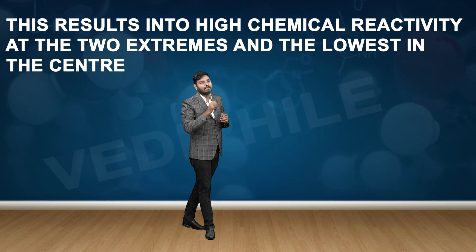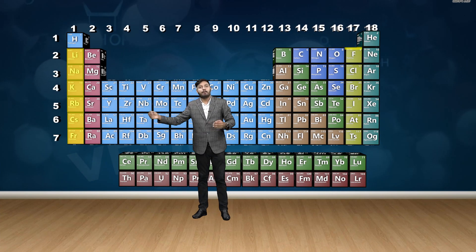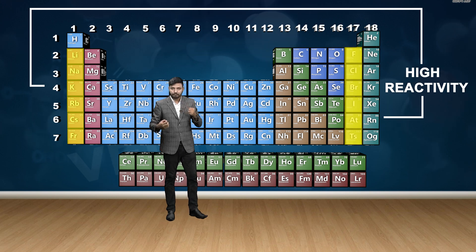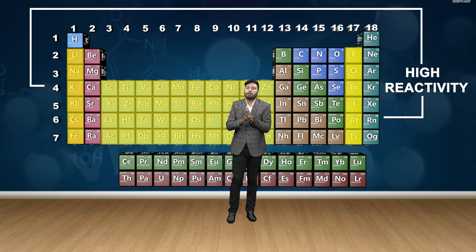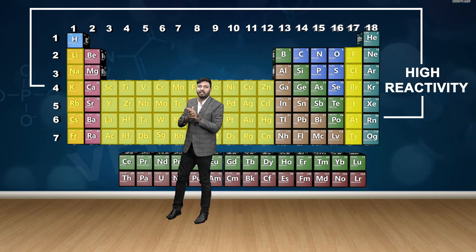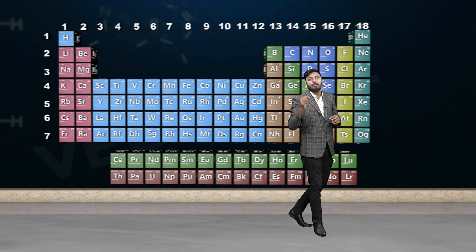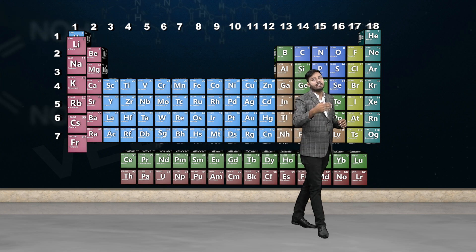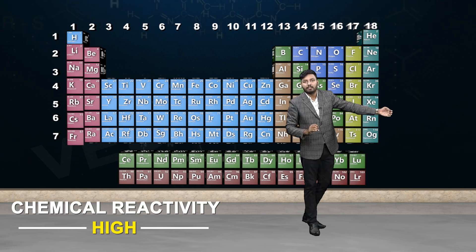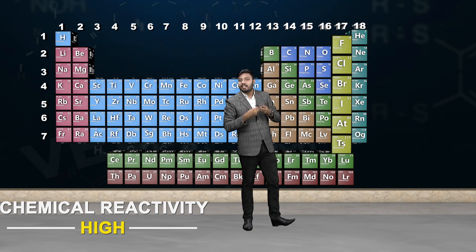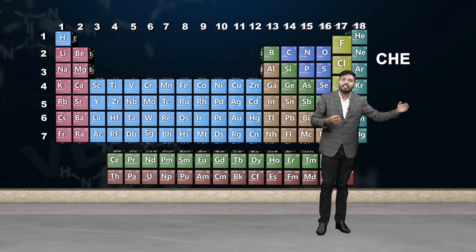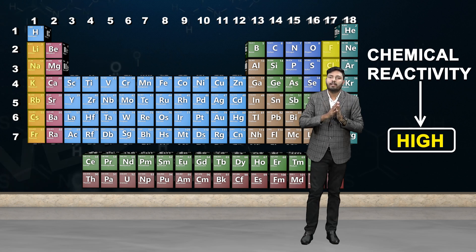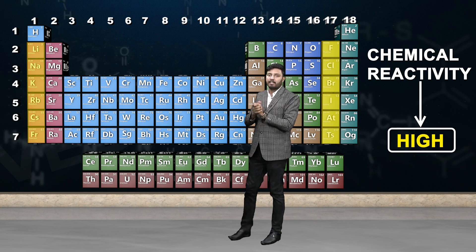This results in high chemical reactivity at the two extremes and the lowest in the center. The two extreme ends of the period show highest reactivity — on the left, one electron is very easily removed; on the right, one electron is very easily gained. So reactivity is highest at both extremes. In the middle of the periodic table, reactivity is not as high. Maximum chemical reactivity at the extreme left is exhibited by the loss of an electron, and at the extreme right — meaning halogens — by gaining an electron and forming negative ions.